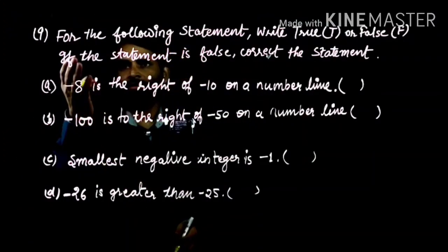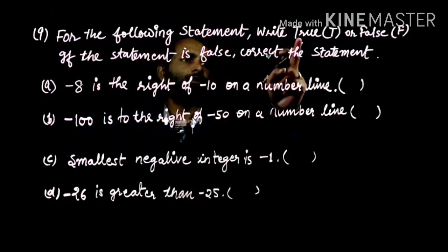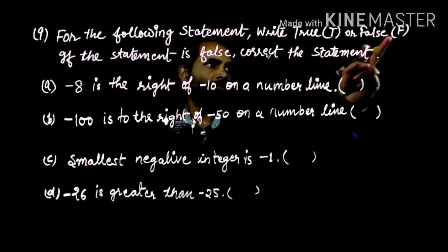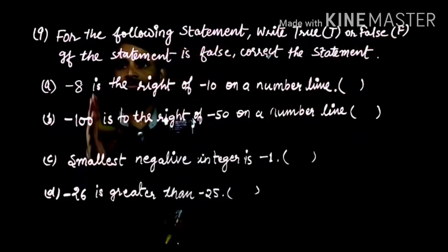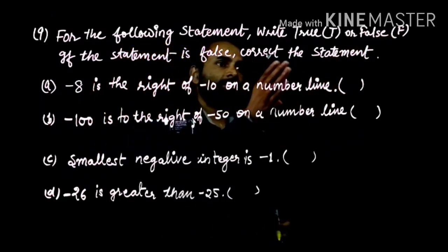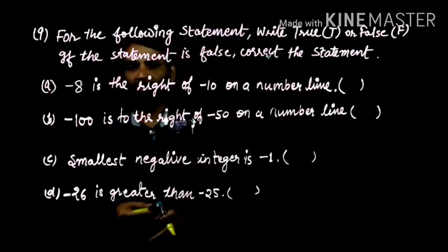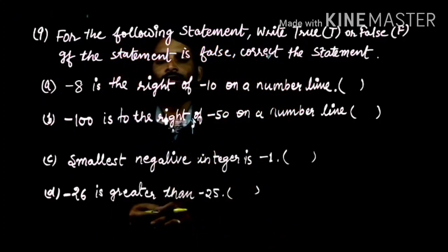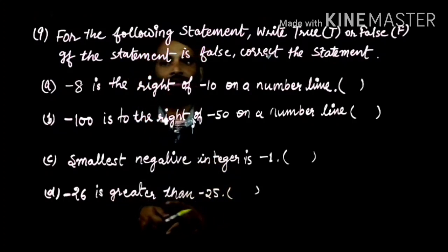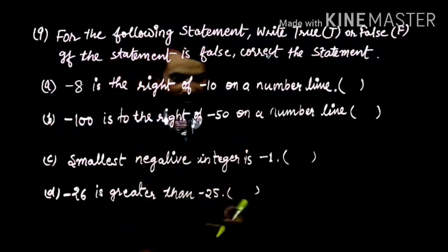Question number 9: for the following statements, write true for T and false for F. If the statement is false, correct the statement. First you read the statement. If there's no problem, your answer is true, but if your answer is false, you write the correct statement.